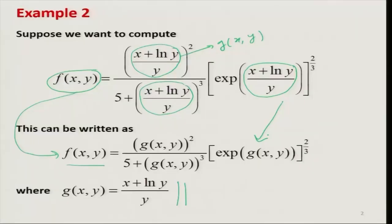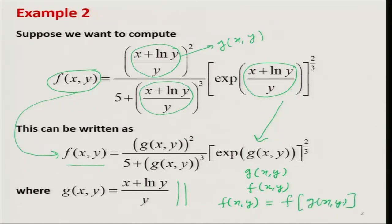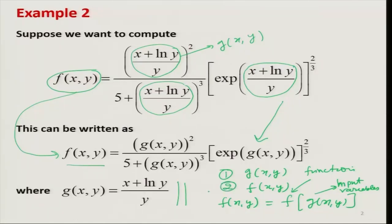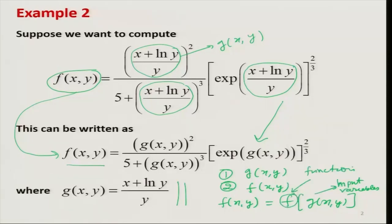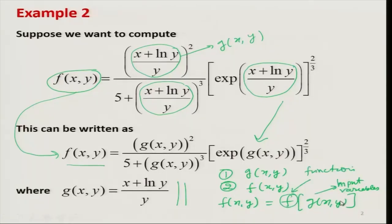We are going to deal with two functions: one is gxy and another is fxy. You can see that f of xy, which is a function, is itself a function of gxy. So if f is my function, then the input variable is gxy. I have the option to develop two programs — one for gxy and then a second for fxy — and this function f must be written such that it contains gxy as its input variable.